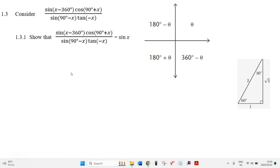Okay, let's try this general reduction problem. Here we've got the question: consider sin(x-360°)cos(90°+x) over sin(90°-x)tan(-x). There's x's in all these places.